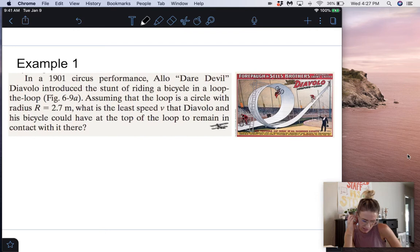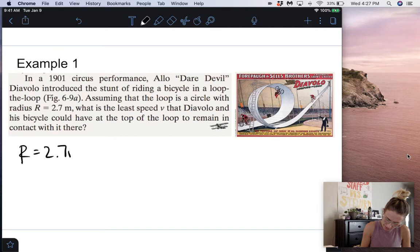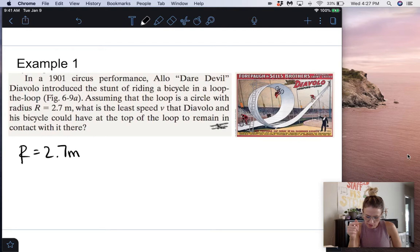We have in a 1901 circus performance, Aloe Daredevil Diavolo introduced the stunt of riding a bicycle in a loop-the-loop. Assuming that the loop is a circle with a radius R of 2.7 meters, what is the least speed V that Diavolo and his bicycle could have at the top of the loop to remain in contact with it there?